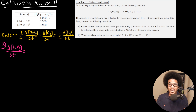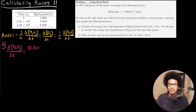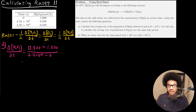We can get this from our data. We're starting with a 1.0 molar solution of H2O2, and our final concentration at the elapsed time interval is 0.5 molar. Delta anything is going to be final minus initial, so your final concentration is 0.5 minus your initial concentration of 1.0, put over your elapsed time: 2.16 × 10⁴ seconds minus 0. When you plug these in, you get negative 2.315 × 10⁻⁵ molar per second.